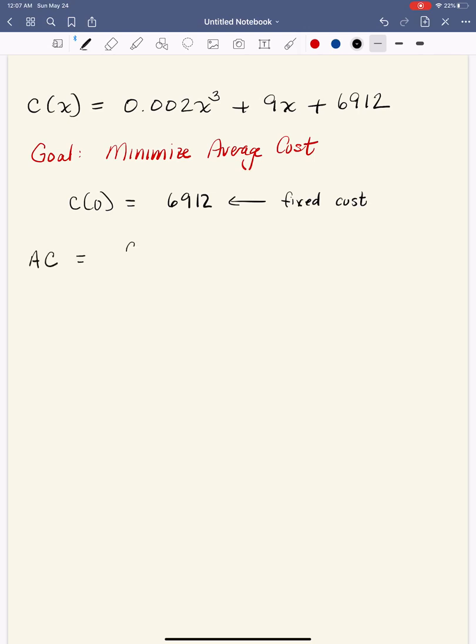is equal to the total cost divided by the number of units. But in this case, X is the number of units. So we're going to say 0.002 X to the third plus 9X plus 6912 all over X.